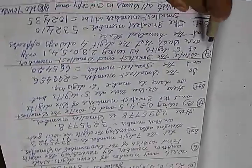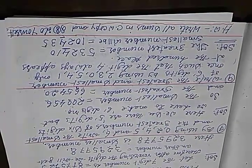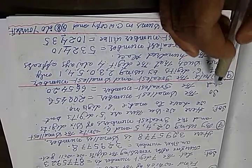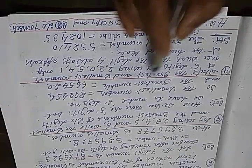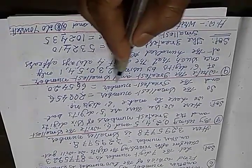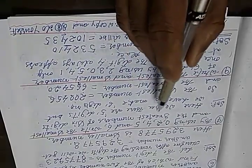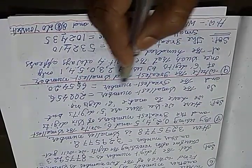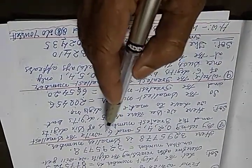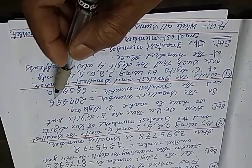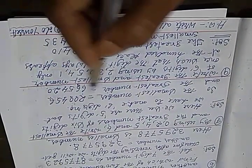Now come to question number 9. Question number 8 I have left for you students — 7 and 9 are almost the same type. The only difference is question 7 is a 6 digit number and in question 8 you have to make a 7 digit number. So do it yourself.